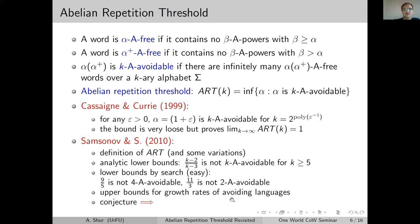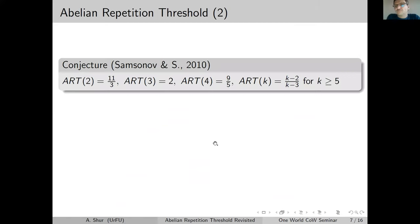We want to know the actual values of the abelian repetition threshold. In a 2010 paper with Alexei Samsonov, we defined the abelian repetition threshold and found analytic lower bounds: (k−2)/(k−3) is not k-A-avoidable for all k starting with 5. For some easy searches we found 9/5 is not 4-A-avoidable, 11/3 is not 2-A-avoidable. The conjecture was: ART(2) = 11/3, ART(3) = 2, ART(4) = 9/5, and ART(k) = (k−2)/(k−3) for larger k.